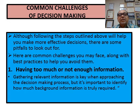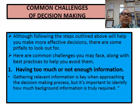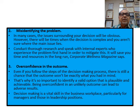What are the common challenges in decision making? Following the seven steps will help you make more effective decisions, but there are some pitfalls. Number one: having too much or not enough information — if your ingredients are not enough, your decision may not be correct. Number two: misidentifying the problem — sometimes you don't understand the real issue. One party says this is the problem, the other says it's something else. If you misidentify the real problem, you will reach the wrong decision.